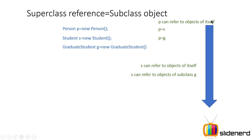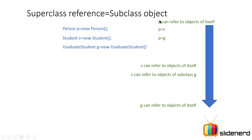Going further, a Student object can refer to objects of itself or to GraduateStudent, which is its subclass. But GraduateStudent can only refer to objects of itself. The basic hierarchy is: the higher you go (the superclass), the more objects it can refer to — its own type plus all subclasses. The lower you go, it can only refer to itself.